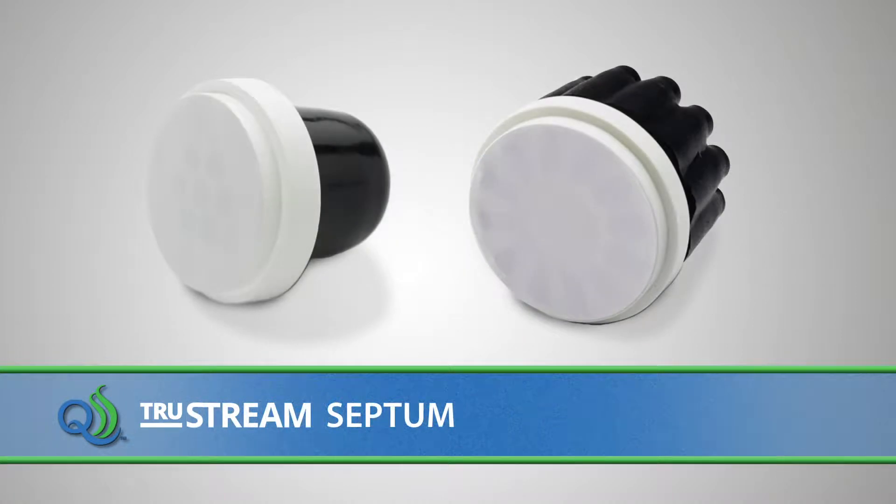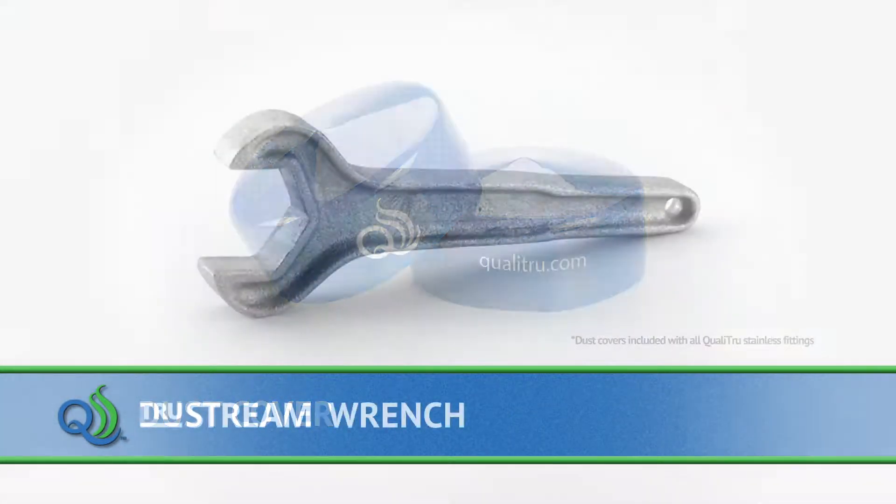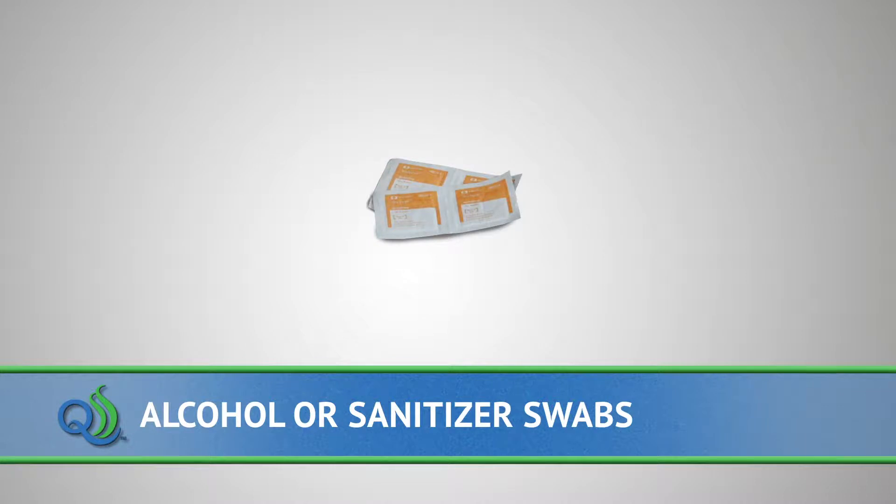a 7 or 12 channel QualiTrue Sterile Septum, a blue dust cover, wrench for tightening the nut used to hold the septum in the QualiTrue Port, alcohol or sanitizer for swabbing the inside of the stainless steel port, and a separate swab for cleaning the surface of the QualiTrue Sterile Septum prior to needle insertion,